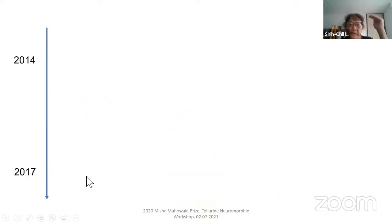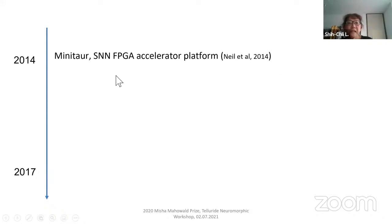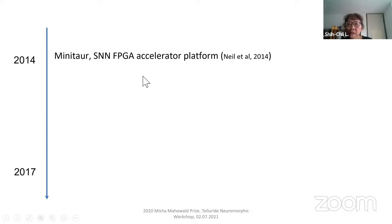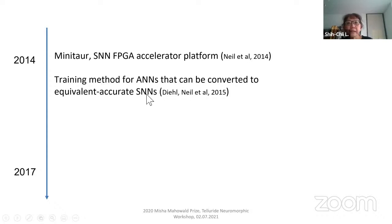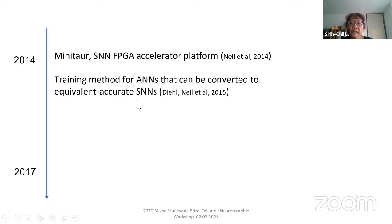Around 2014 was when Danny built our first SNN FPGA accelerator platform — he called it Minotaur because he had such a difficult time getting it to work. The idea was to interface it to the DBS and run these algorithms in real time. Then because deep learning became the state-of-the-art method for many problems, we had to figure out whether we could build equivalent accurate SNNs that work just as well on benchmark tasks. Danny and a few other students developed training methods for ANNs that you can then convert into equivalent accurate SNNs.